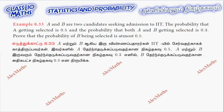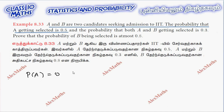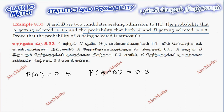Hi students, this is Alex here. Example 8.33: A and B are two candidates seeking admission to IET. The probability of A getting selected is 0.5, so P(A) = 0.5. The probability that both A and B get selected, that is P(A intersection B), is equal to 0.3.